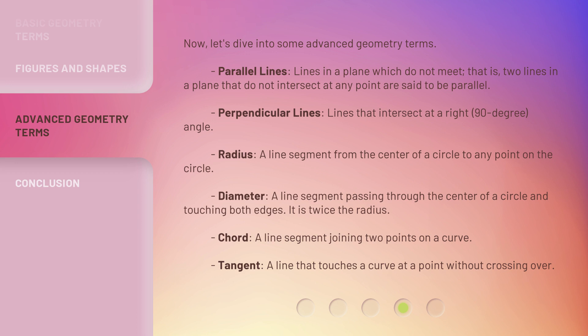Radius: A line segment from the center of a circle to any point on the circle. Diameter: A line segment passing through the center of a circle and touching both edges. It is twice the radius. Chord: A line segment joining two points on a curve. Tangent: A line that touches a curve at a point without crossing over.